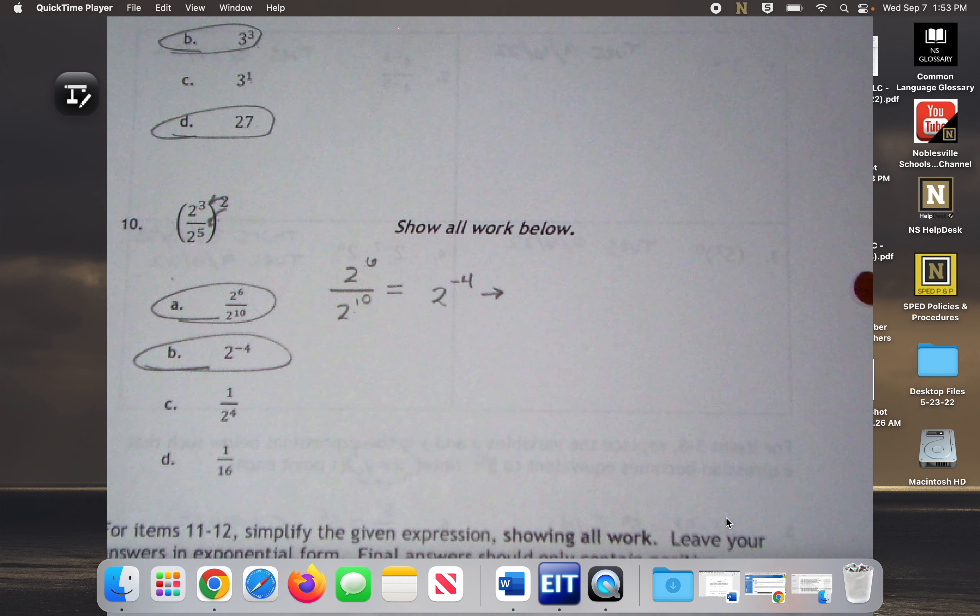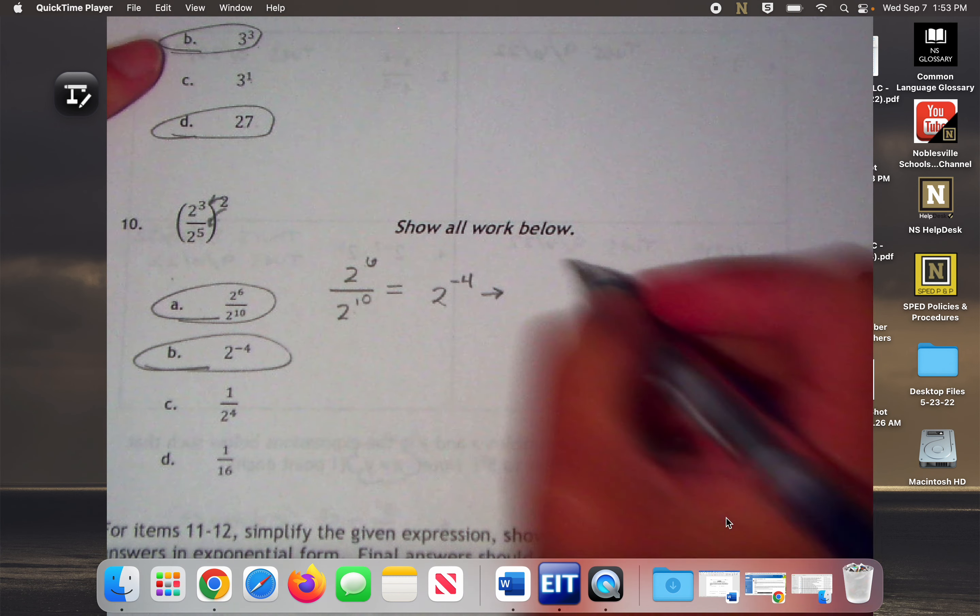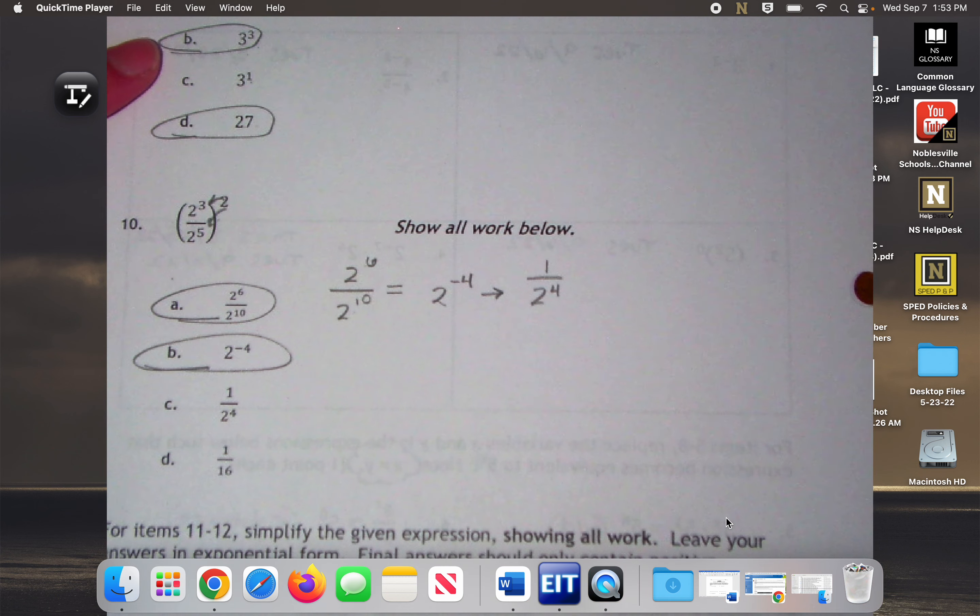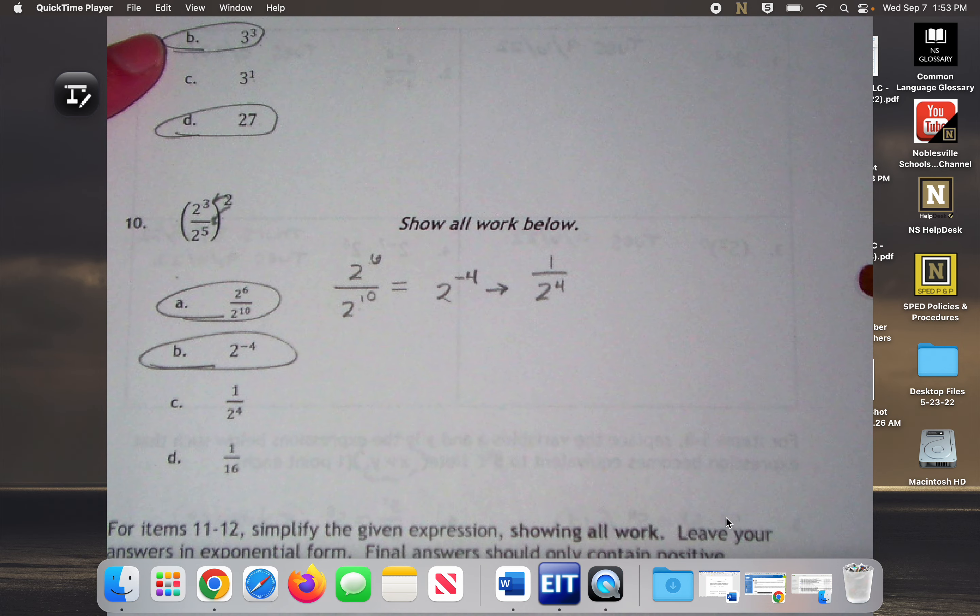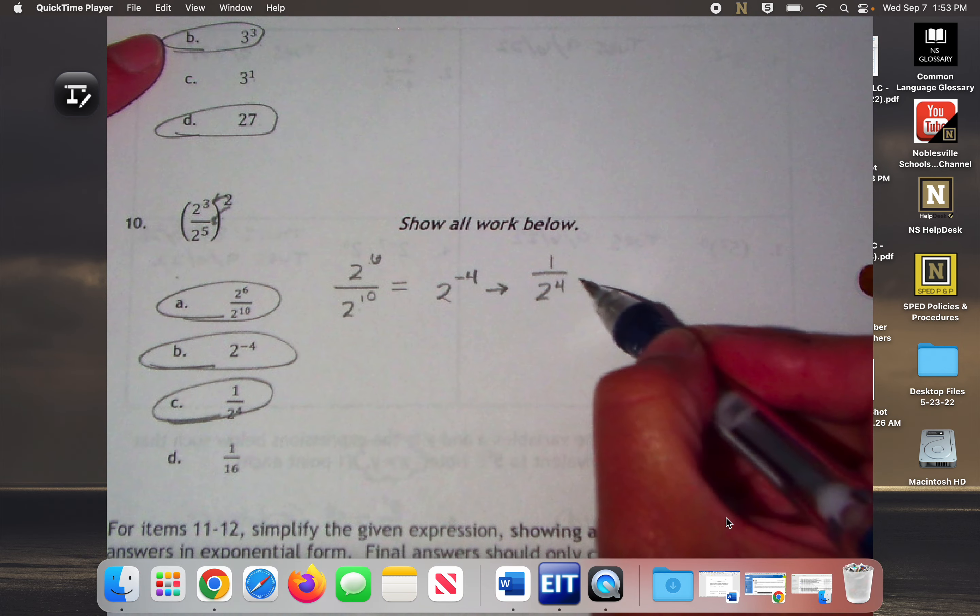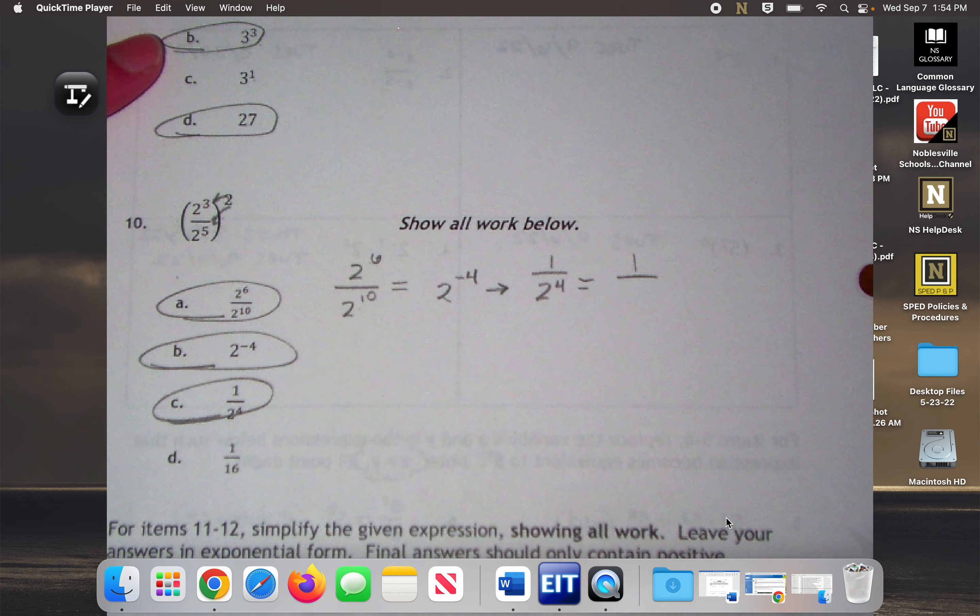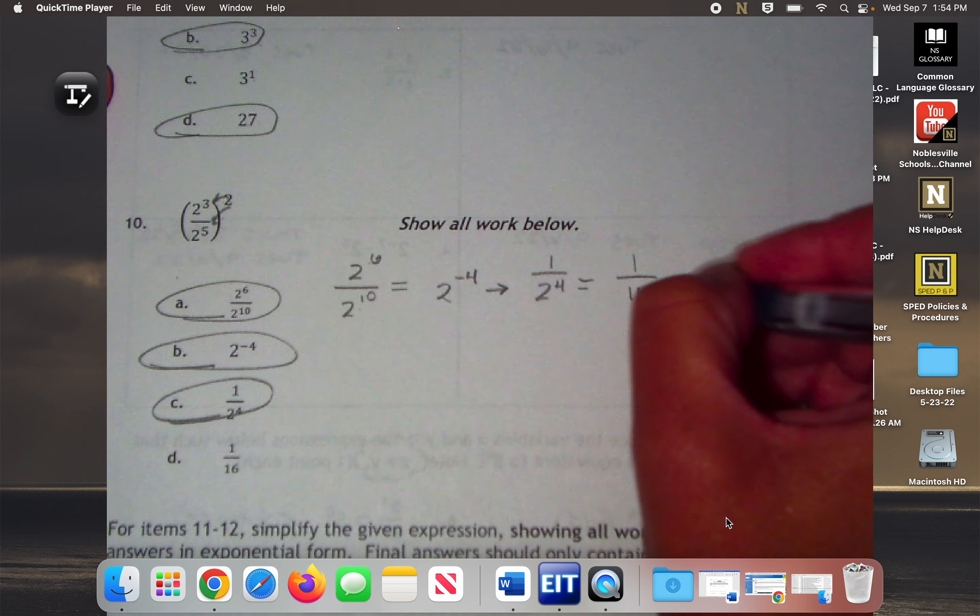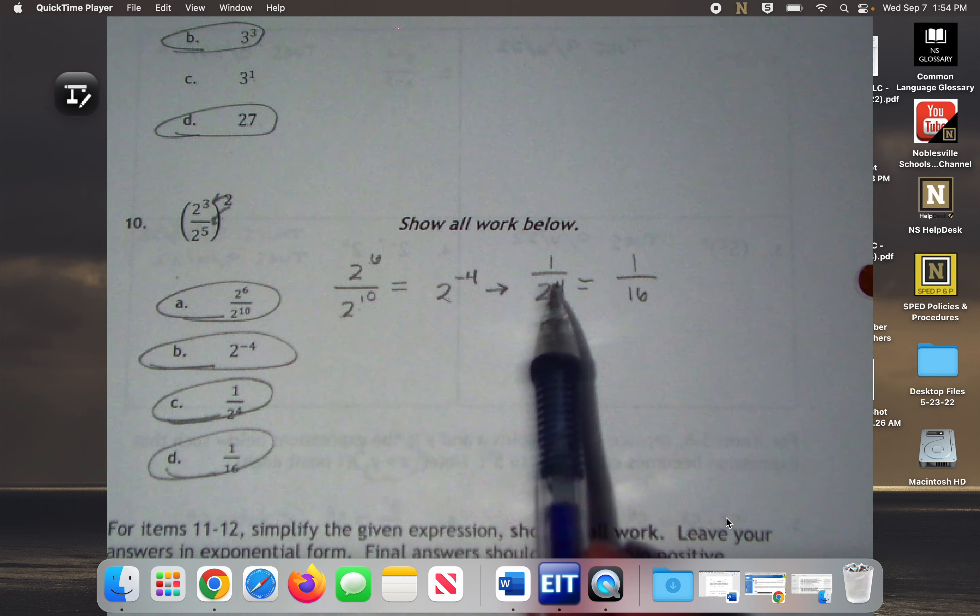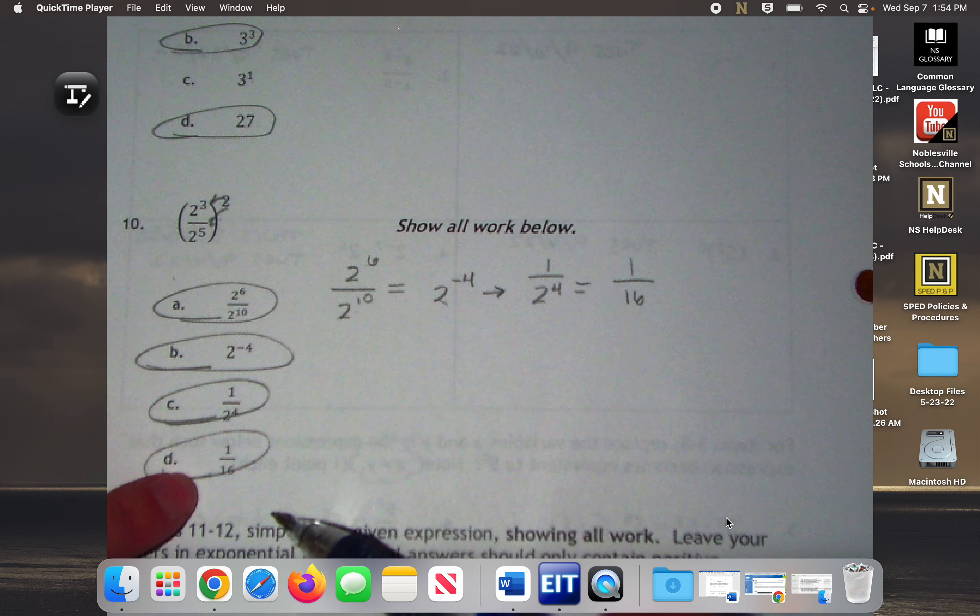And then I can even continue this. What's 2 to the 4th power? 16. Do I see that in any of the choices? Yes. So each of these steps that I took showed up as a part of the process that's equivalent. Those are the equivalent expressions.